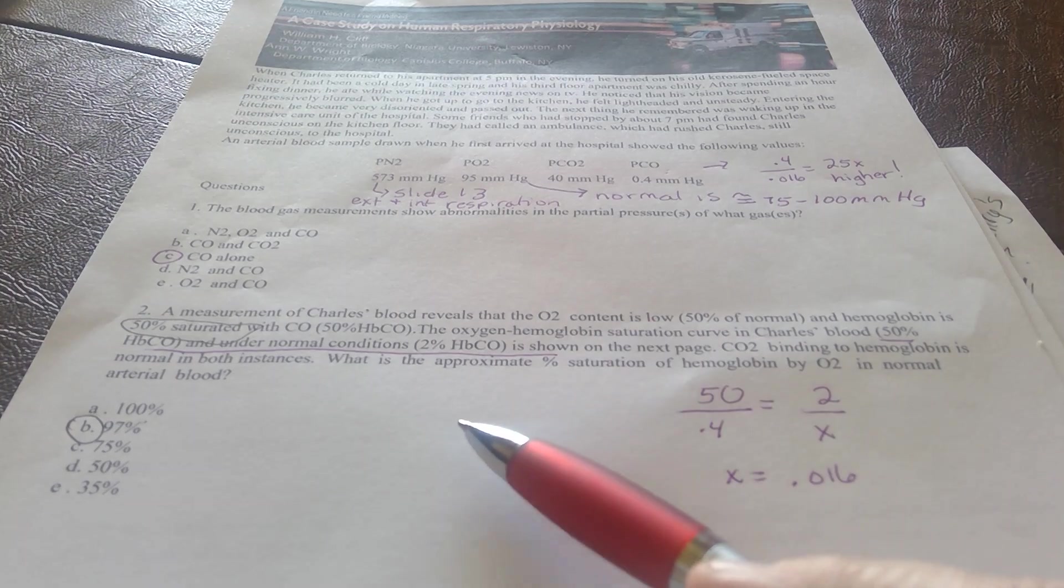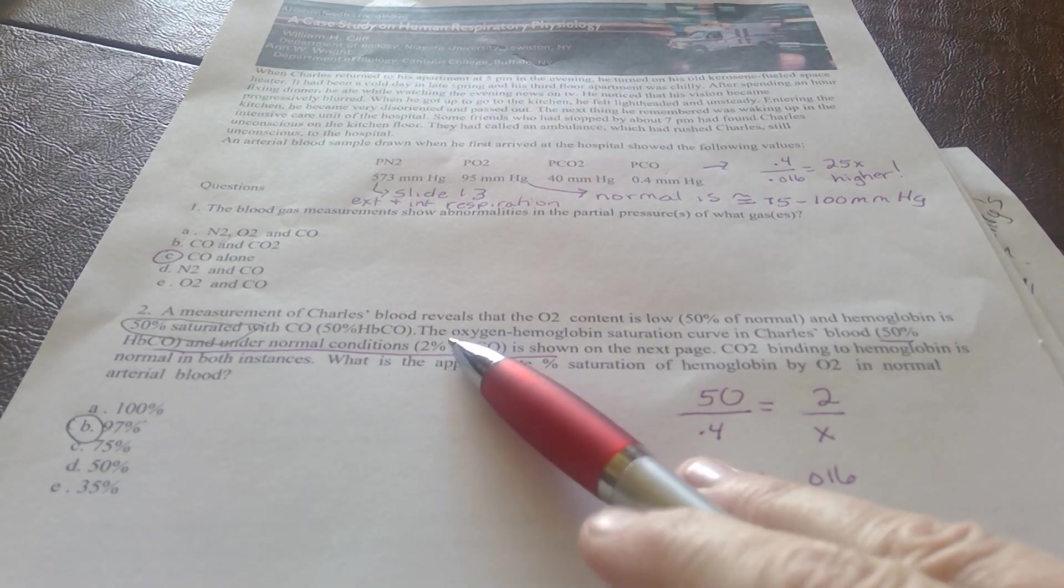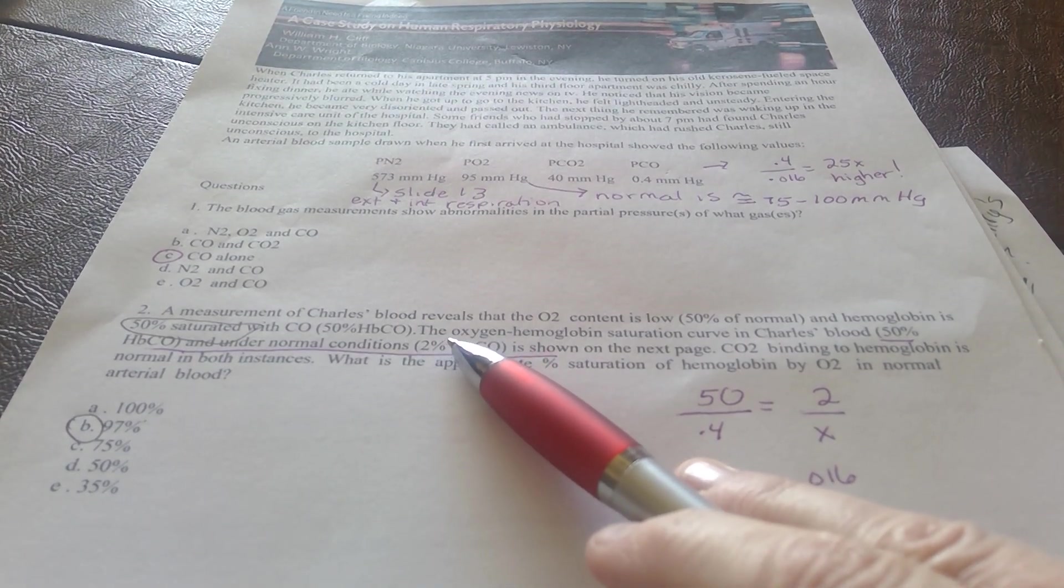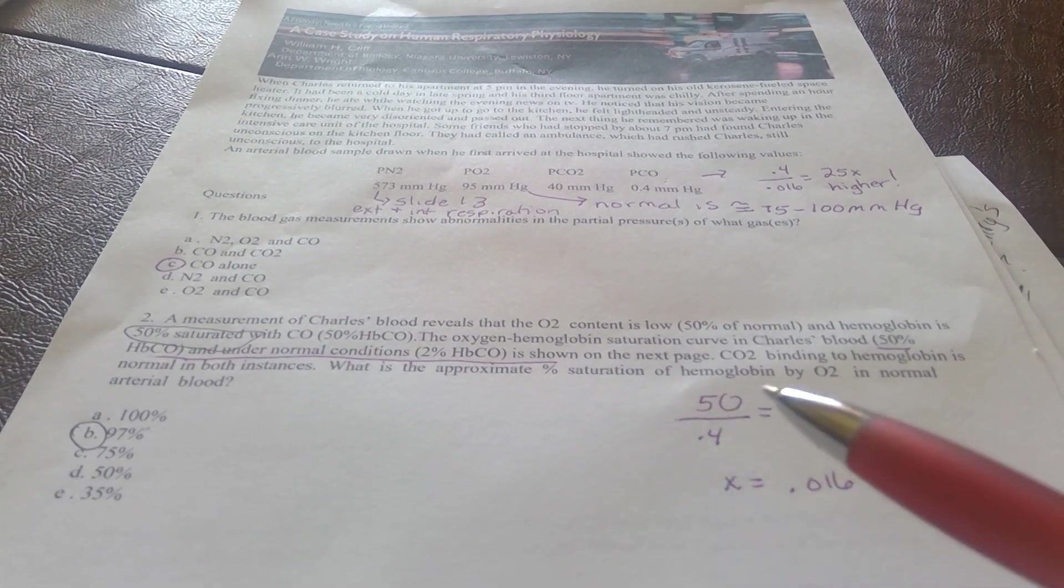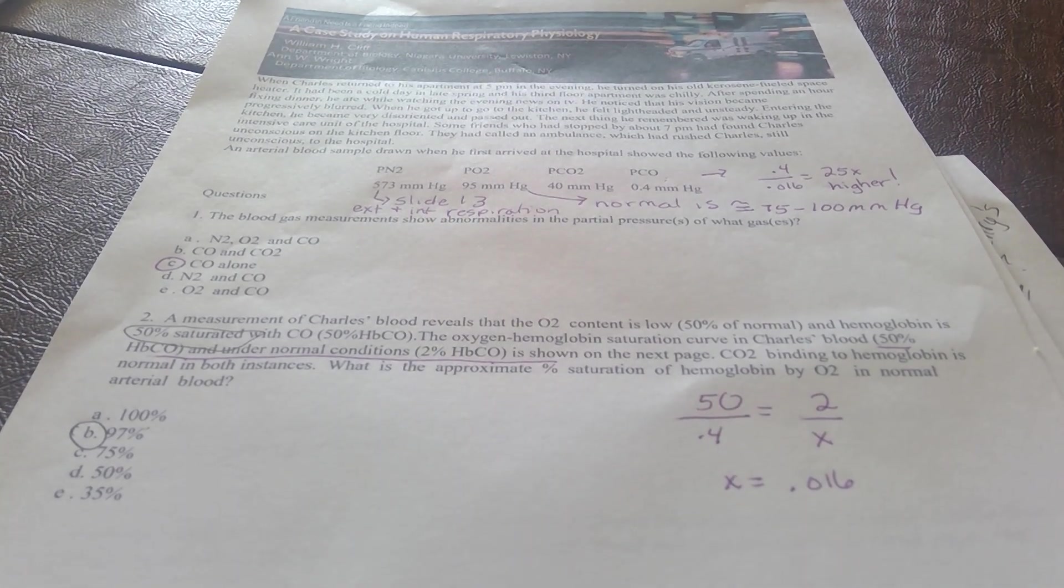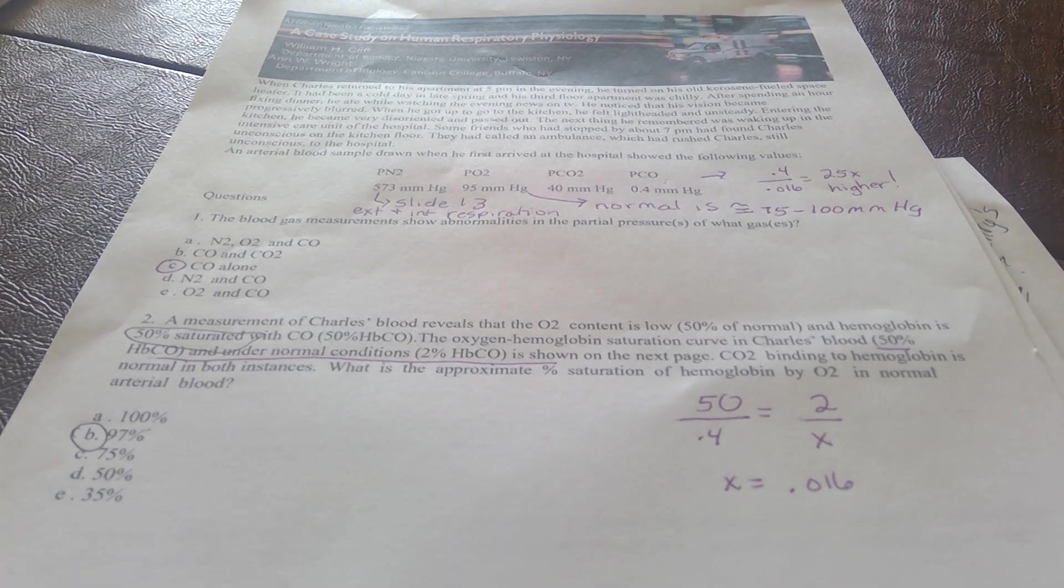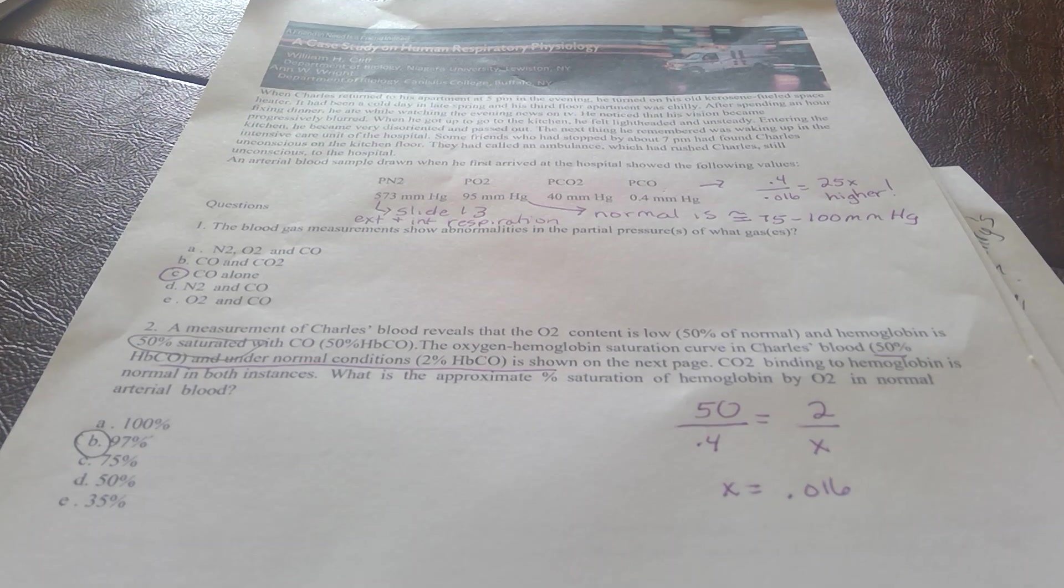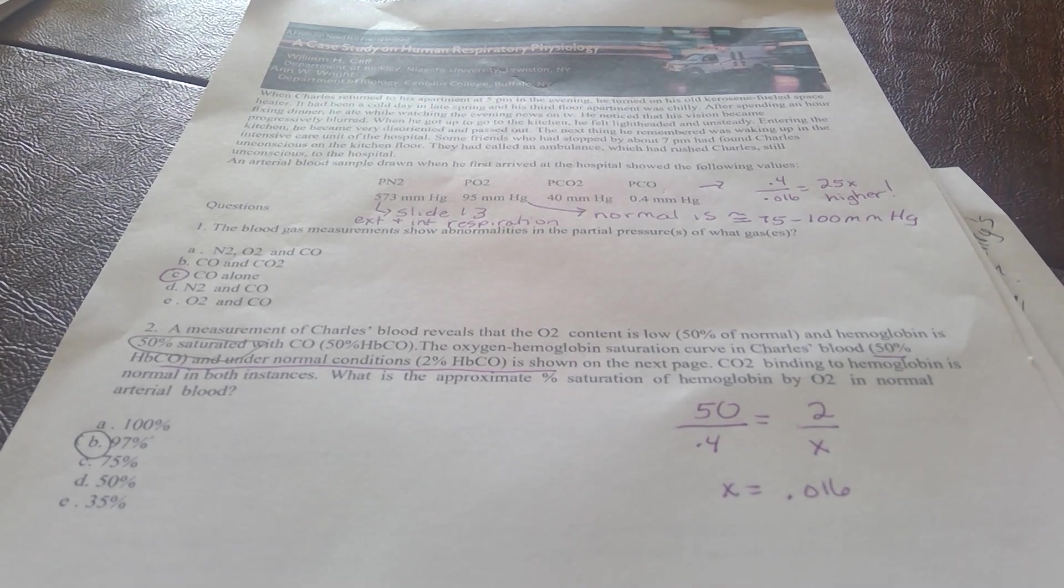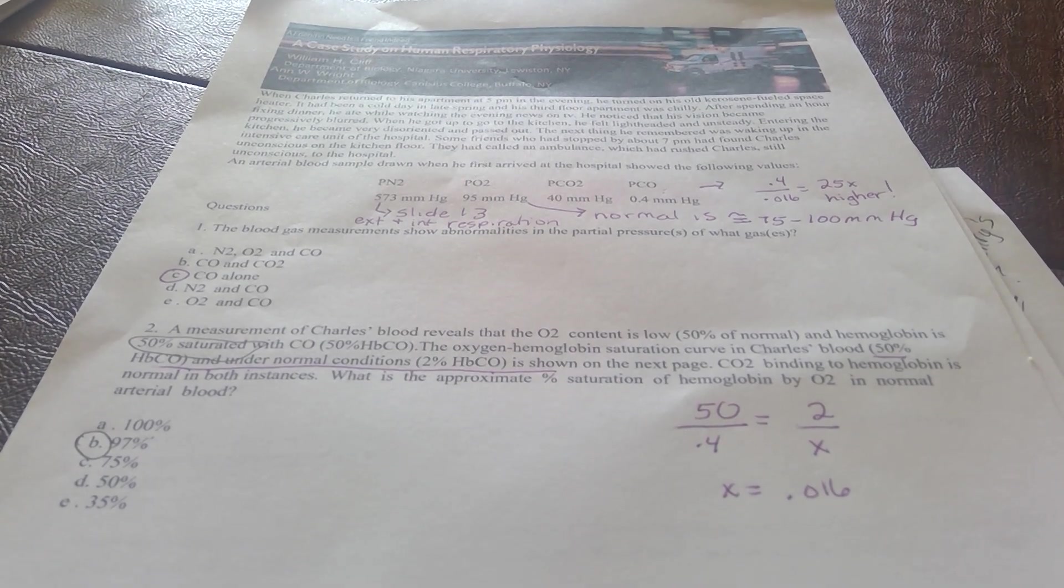We are told that Charles has 50% carbon monoxide poisoning and his partial pressure is 0.4. Using the math from your mini lab exam for the first 20 pages or so of your first lab manual, you know how to do ratios.